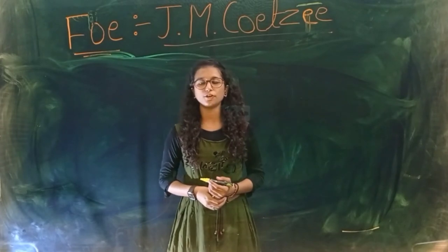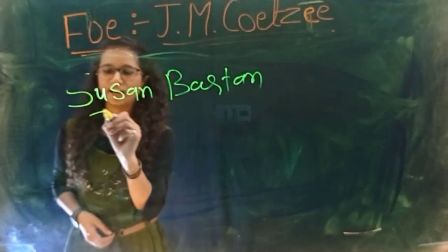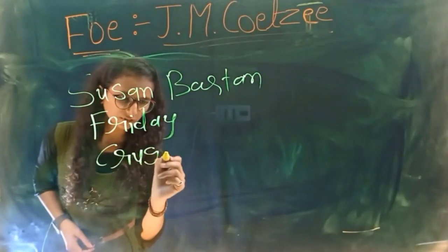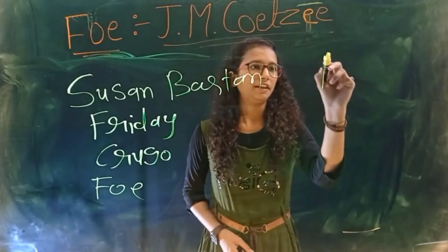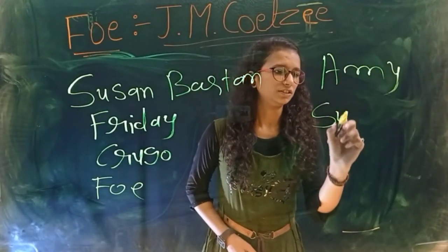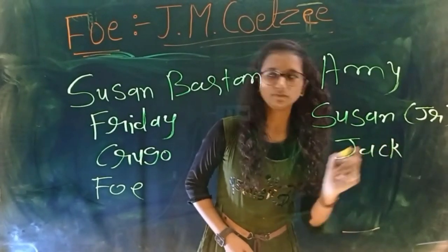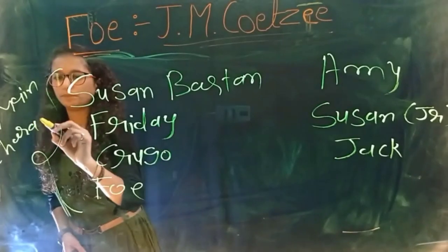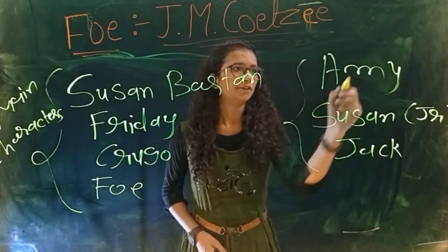Now we can discuss the characters of the novel. The major characters are Susan Barton, Friday, Crusoe, Foe, and Amy. The minor characters are Susan Junior and Jack.